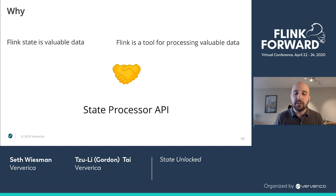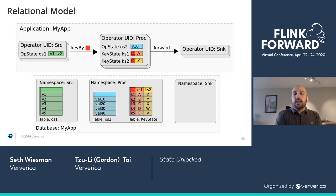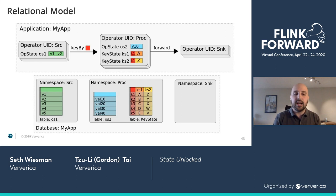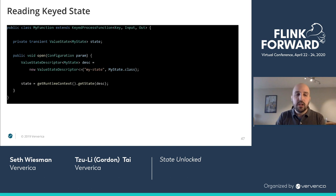Why does this whole API exist? It is because Flink state is valuable data — the most important thing we have — and Flink is a tool for processing valuable data. It seems obvious that it should be able to process itself. When thinking about reading and writing save points with the State Processor API, it is based on a relational model. If you are familiar with databases, it has a very clean mapping, well-described in the documentation, giving you a nice mental model to think about how to read and write state.